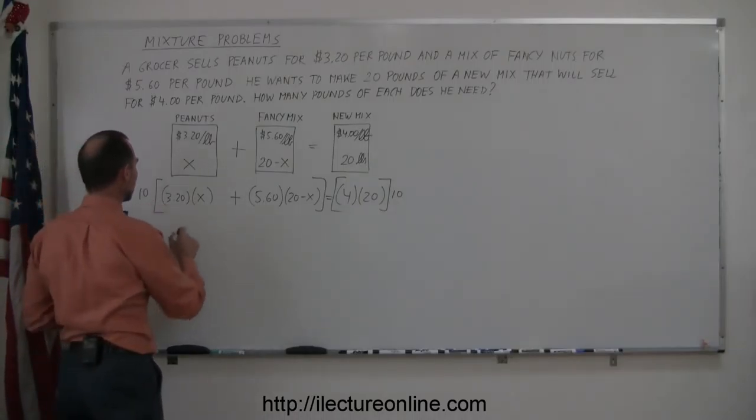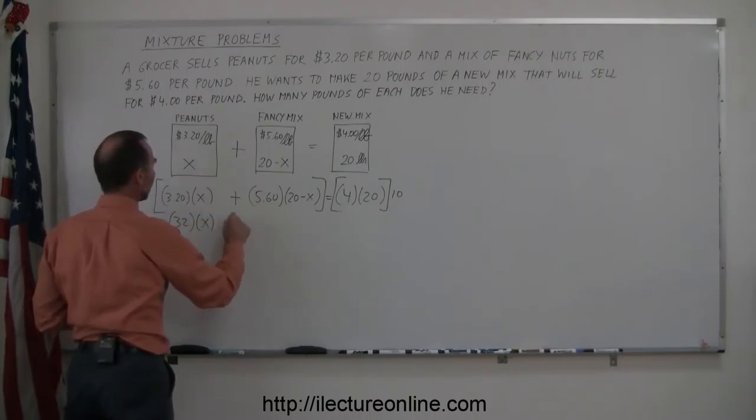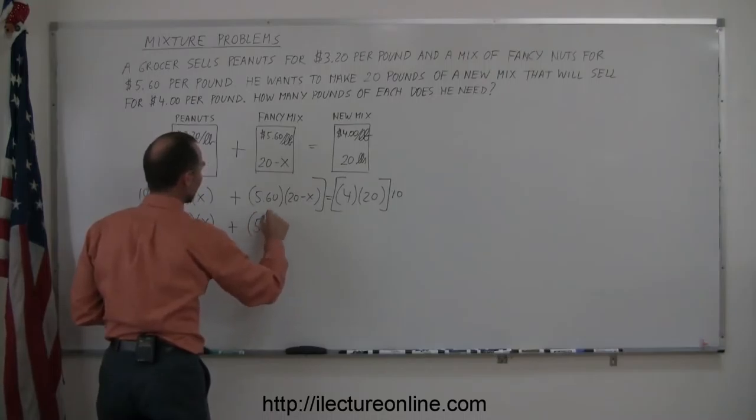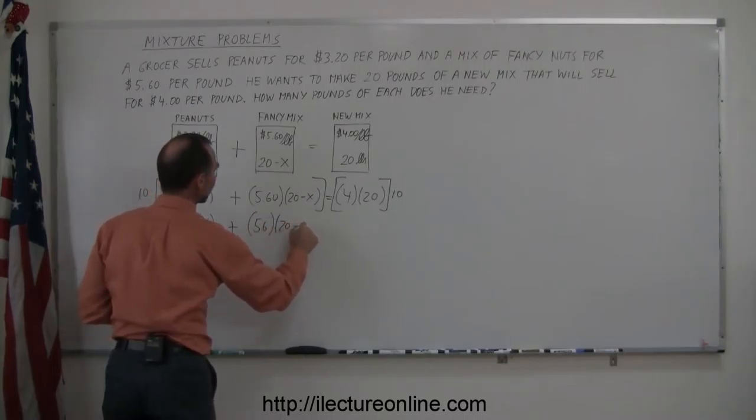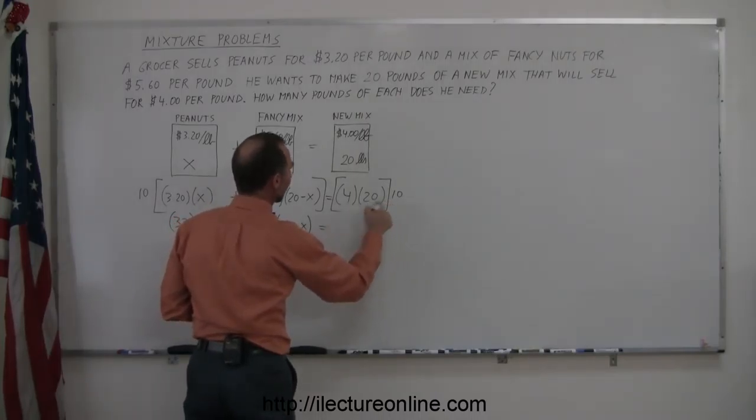10 times 3.2 is 32, so we got 32 times X, plus 10 times 5.6 is 56, times 20 minus X, is equal to 4 times 20, that's 80, times 10, that's 800.